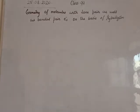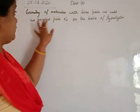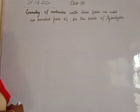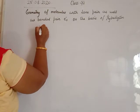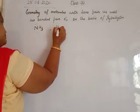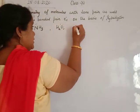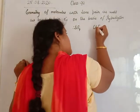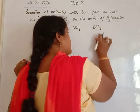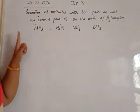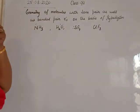Good morning students. Today we will discuss the geometry of molecules which have lone pairs as well as bond pairs of electrons, on the basis of hybridization. These types of molecules are ammonia, water, sulphur tetrafluoride, and trifluorochlorine. These 4 molecules, which have bond pairs as well as lone pairs of electrons, are in our syllabus.